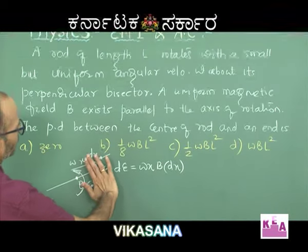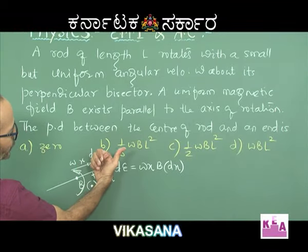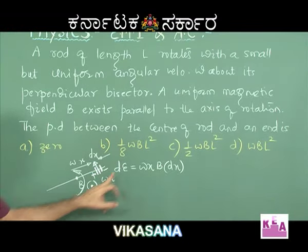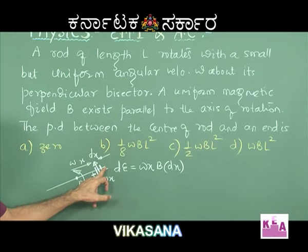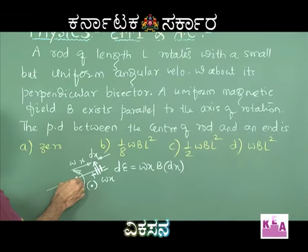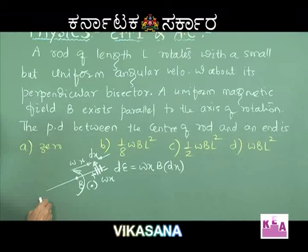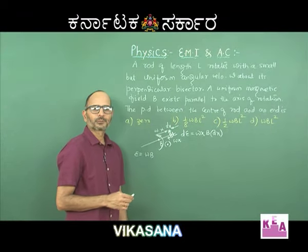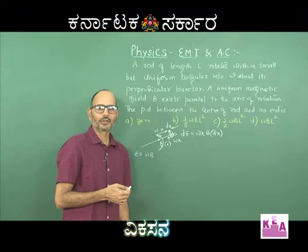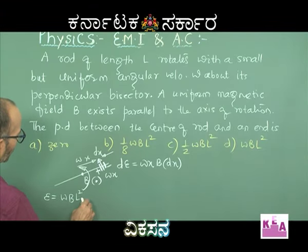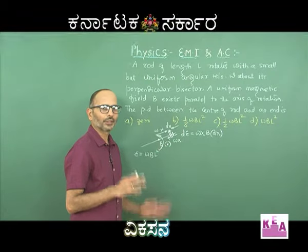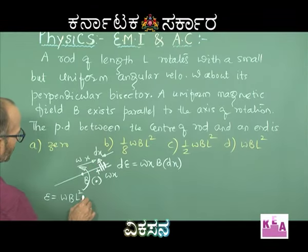Now integrating dE = omega·B·x·dx from x = 0 to x = L/2 gives the total EMF between the center and one end. Omega and B are constant; integrating x with respect to x gives x²/2. Substituting the upper limit L/2: (L/2)² = L²/4, and with the factor of 1/2, we get omega·B·L²/8.